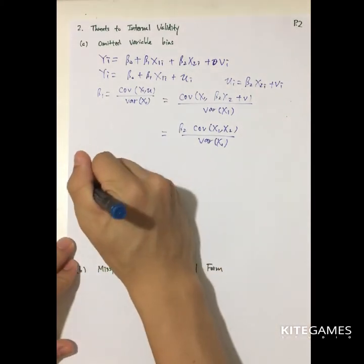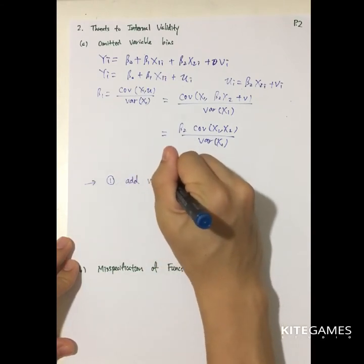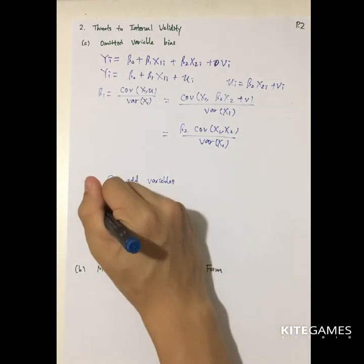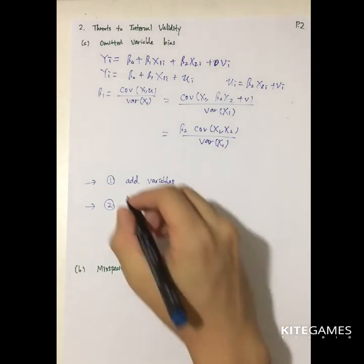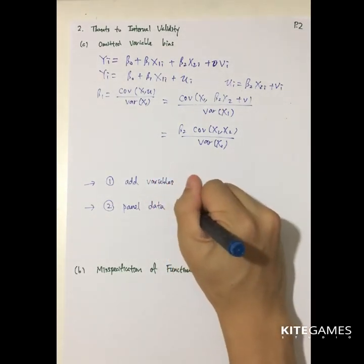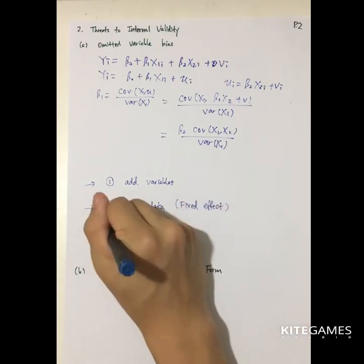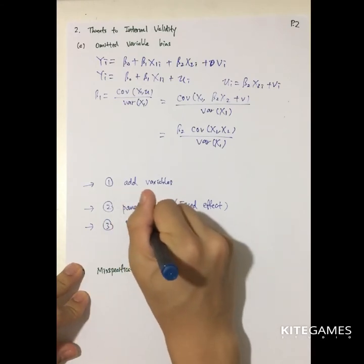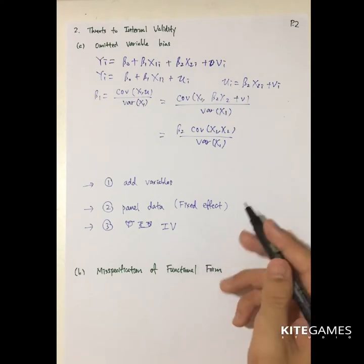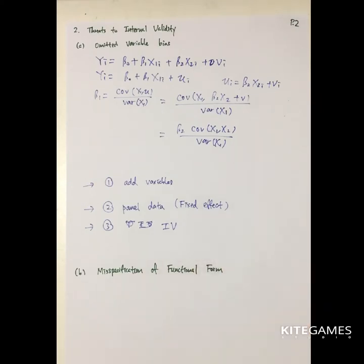To solve omitted variable bias, we have three approaches. First, if the data is available, add the omitted variables to the model. Second, if the data are not available, use panel data techniques — in particular, fixed effects estimation can solve this problem. The last solution is using IV (instrumental variables) estimation, which is another method to solve omitted variable bias. I will discuss panel data and IV in future videos.